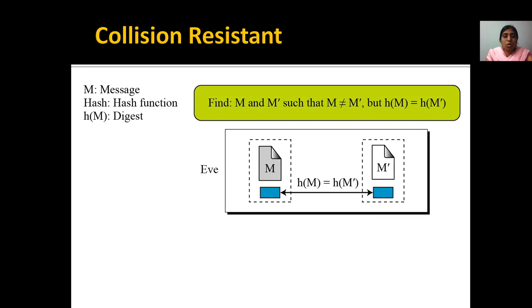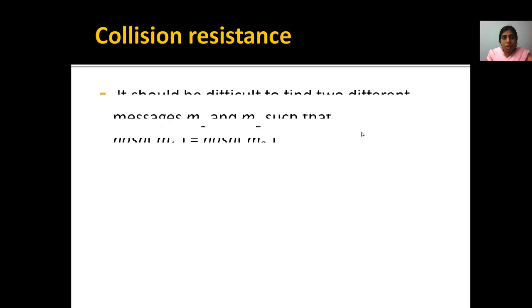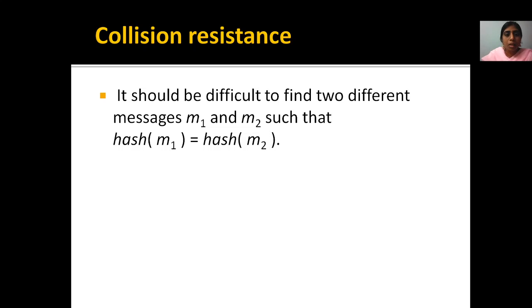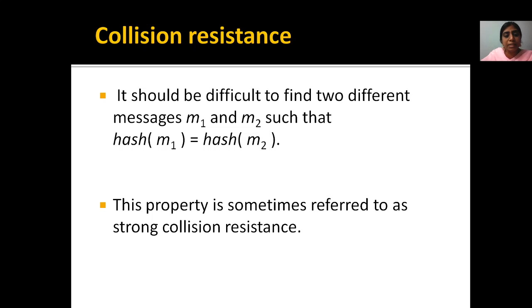Coming to collision resistance: whenever we are sending a message, the hash function of the message at the sending side and the hash function at the receiving side should both be the same. Hash(M1) equals hash(M2), but the messages may not be the same — the hash codes may be equal. Collision resistance means it is difficult to find two different messages M1 and M2 such that hash(M1) equals hash(M2). This property is referred to as strong collision resistance.